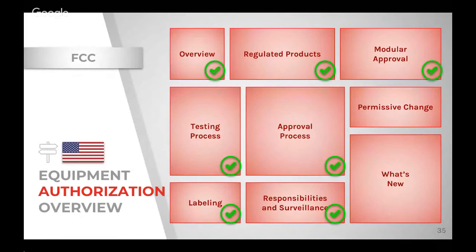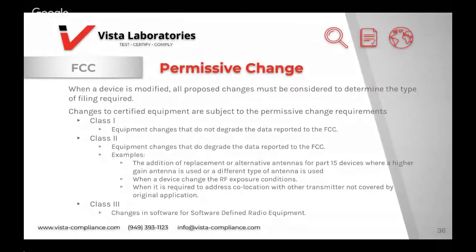Now we'll talk about permissive changes — what to do when the product is modified. A general rule of thumb is that anything causing degradation of the data reported to the FCC requires a new filing. There are three classes: Class I permissive change means the equipment doesn't degrade the data reported to the FCC — performance characteristics such as radio output power are no worse. Class II covers equipment changes that do degrade the data reported, such as a new antenna with higher gain, new conditions of use, changed RF exposure conditions, or a co-location situation not previously addressed in the original application. Class III permissive changes apply to software-defined radio equipment.